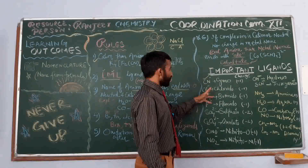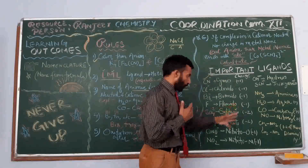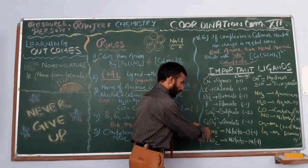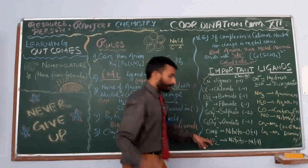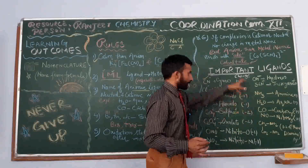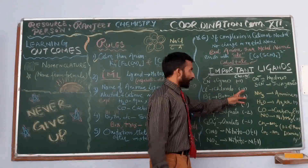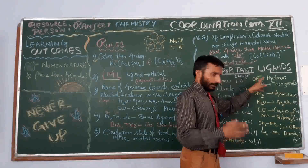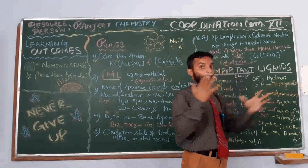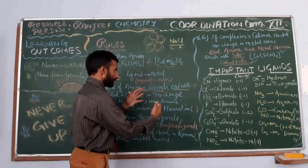Cyanide becomes cyano, chloride becomes chlorido, bromide becomes bromido, sulfate becomes sulfato, oxalate becomes oxalato, nitrite becomes nitrito. If the donor site is O, we write nitrito-O; if it is N, we write nitrito-N. This charge on the ligand is required to calculate the oxidation number. Hydroxide is now named hydroxido. Thiocyanide is known as thiocyanido when acting as a ligand. This is about anionic ligands which end with O.